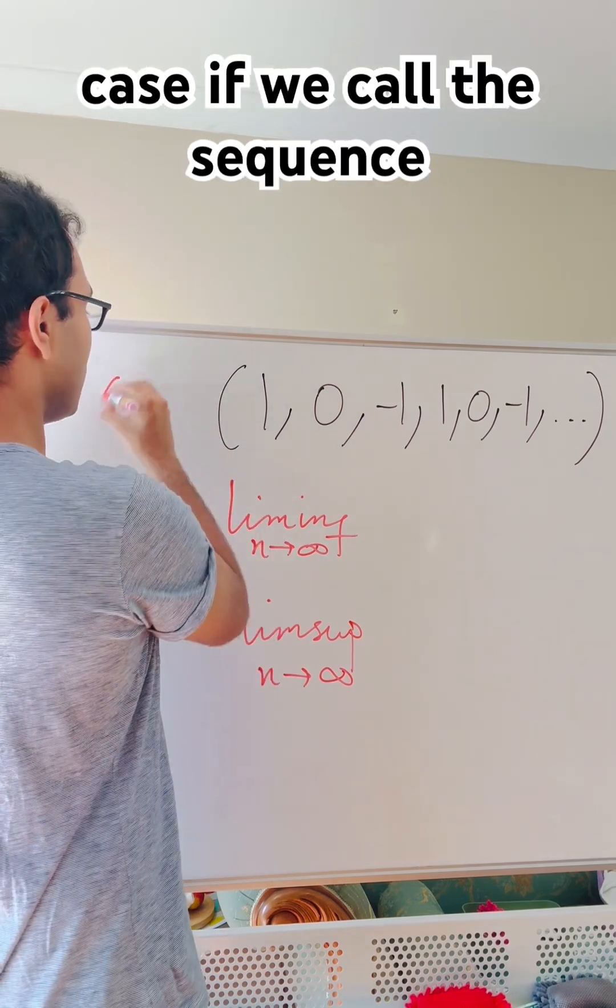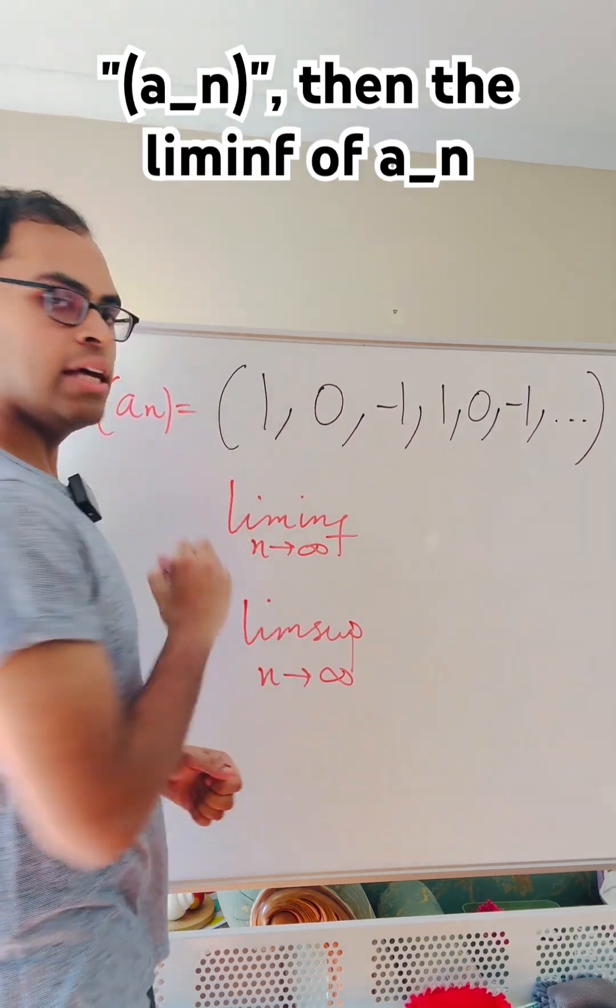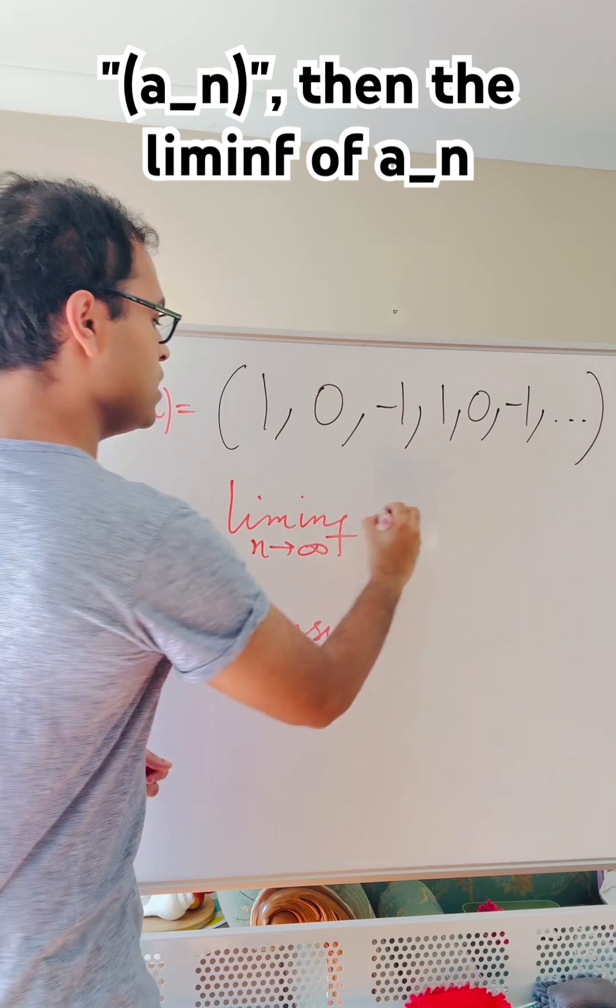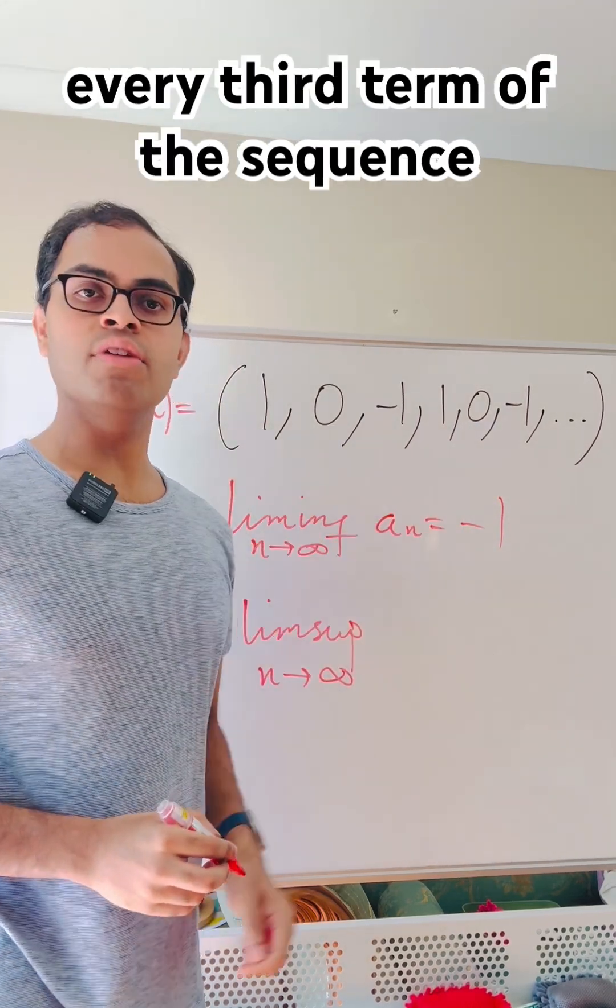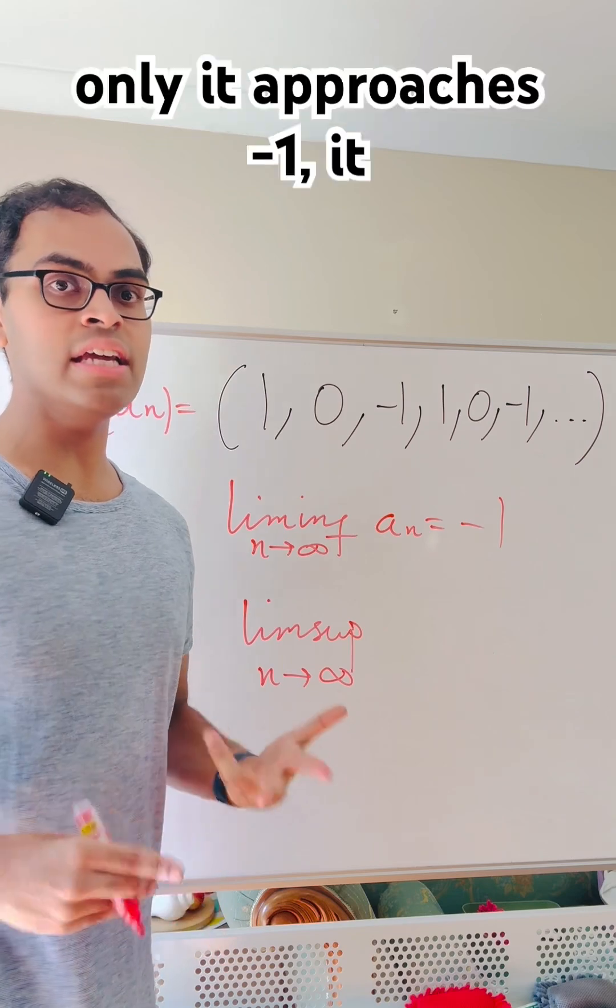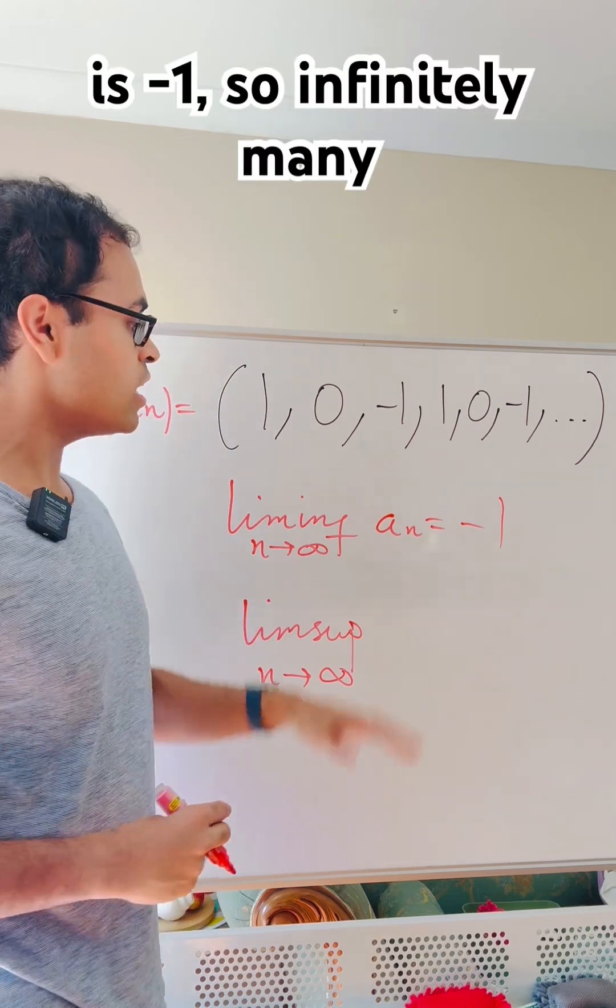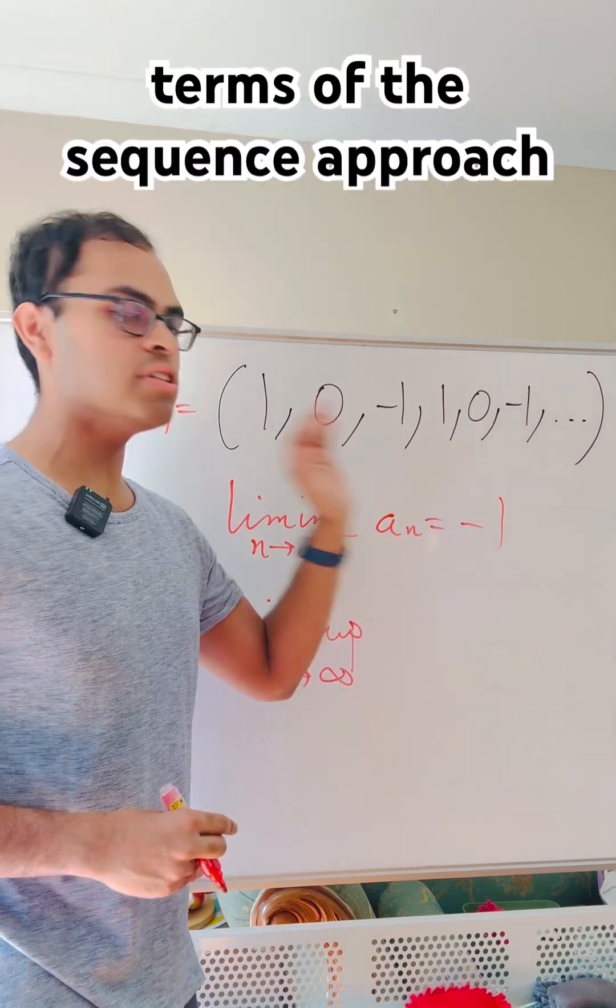So in this case, if we call the sequence a_n, then the lim-inf of a_n is going to equal negative 1 because every third term of the sequence is negative 1. So not only it approaches negative 1, it is negative 1. So infinitely many terms of the sequence approach negative 1.